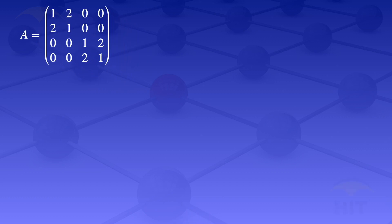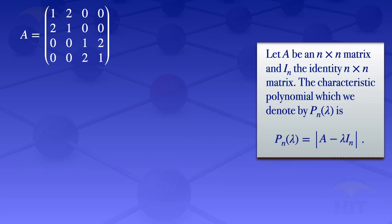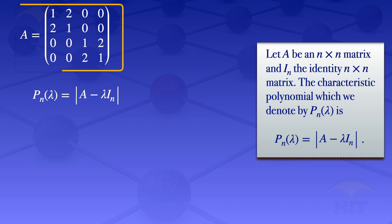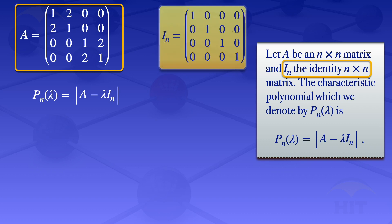By definition, the characteristic polynomial is the determinant of A minus lambda I_N, where I_N is the identity matrix. So I will write our p_n of lambda — the characteristic polynomial — as the determinant of A minus lambda I_N. In this case, our A is that 4 by 4 matrix, and our identity matrix would have the same size as the matrix that is given.